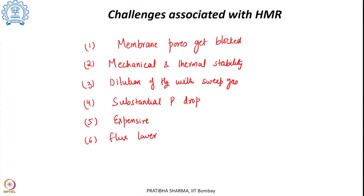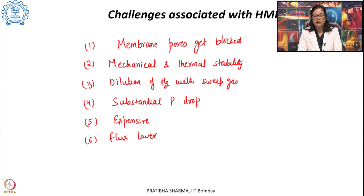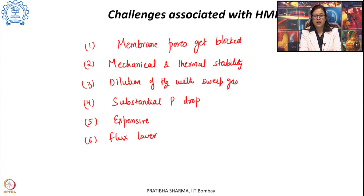In today's class we have seen, other than conventional steam methane reforming, two more methods: sorption enhanced reforming and hydrogen membrane-based reforming, which address the limitations of the chemical equilibrium of the steam methane reforming process. However, both these methods are still not being utilized for industrial-scale hydrogen production.